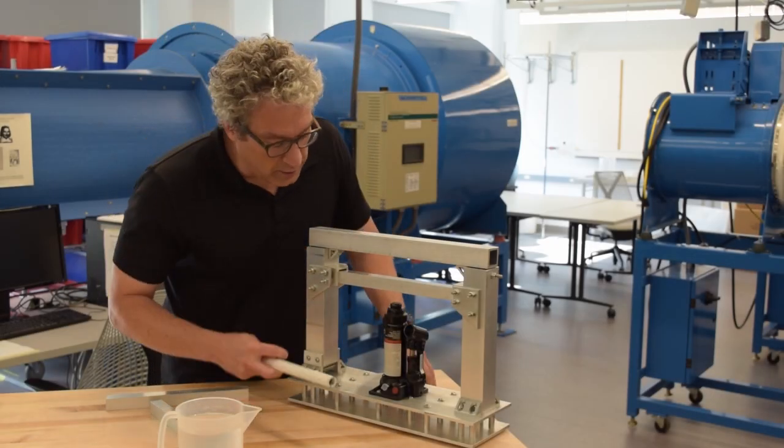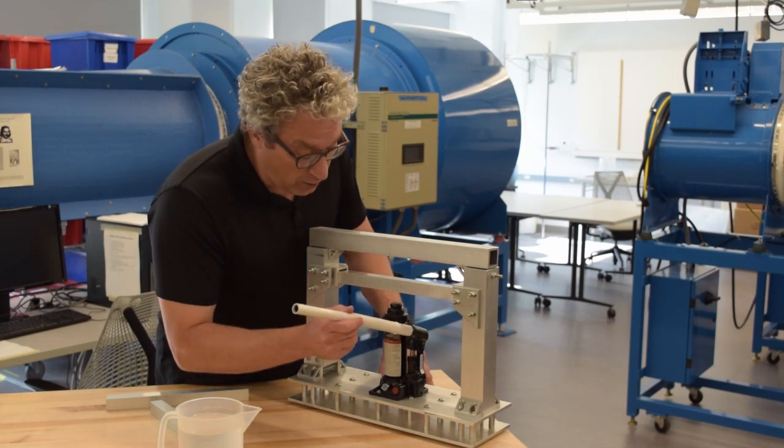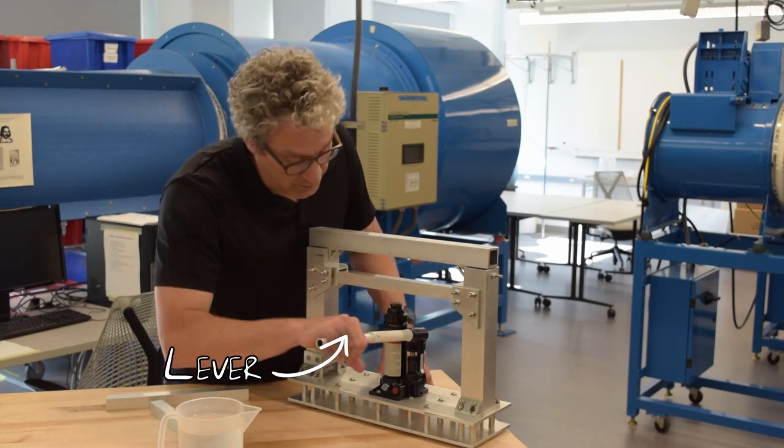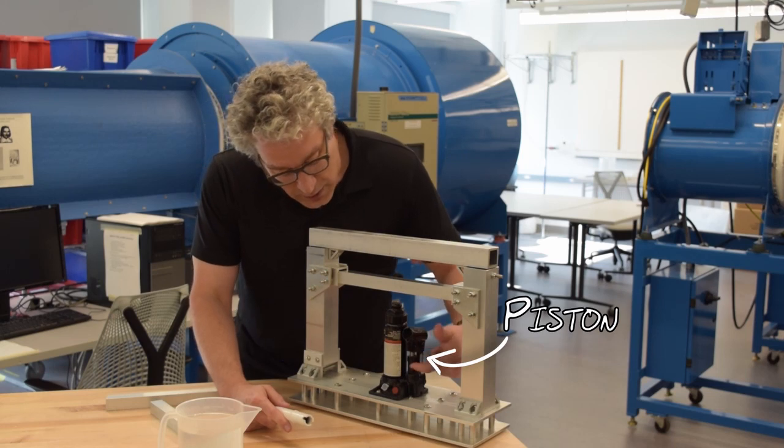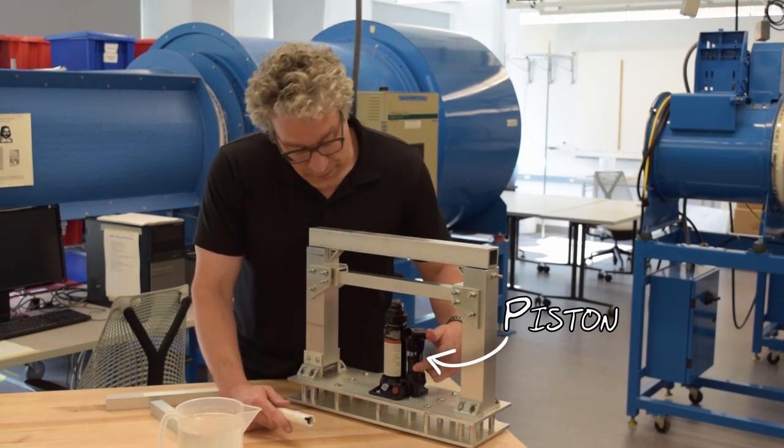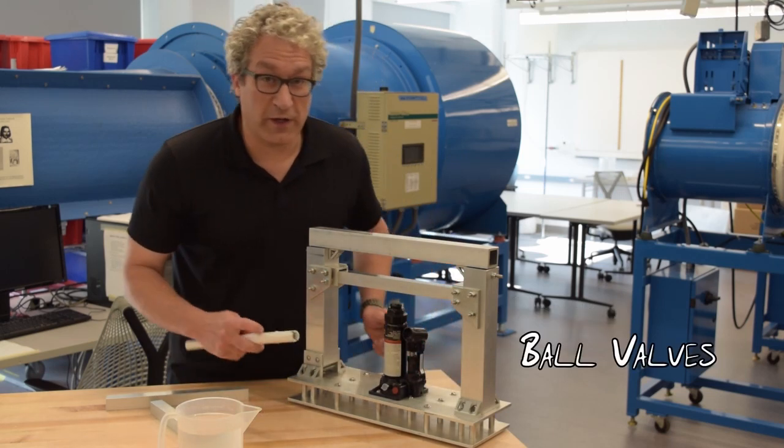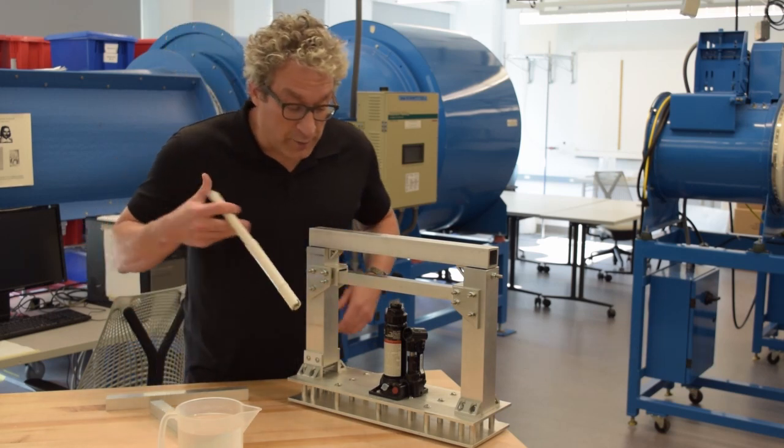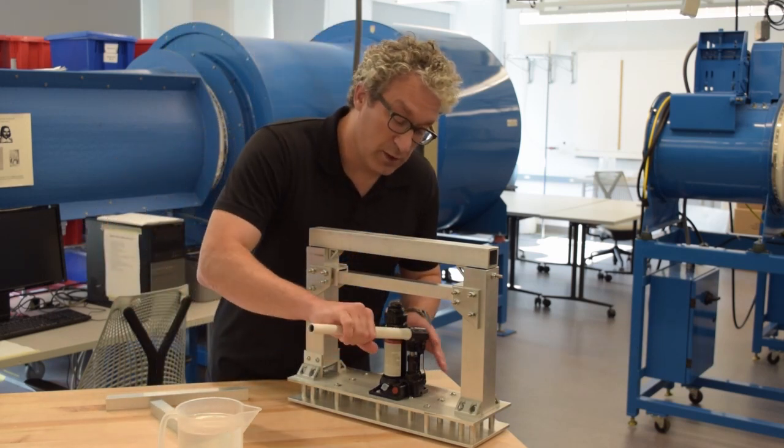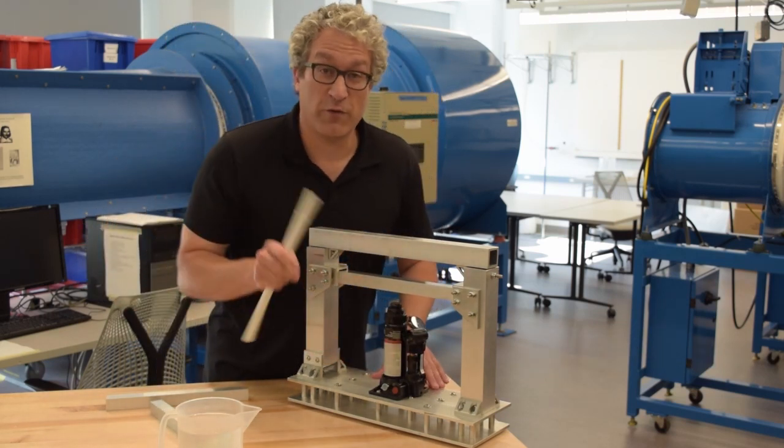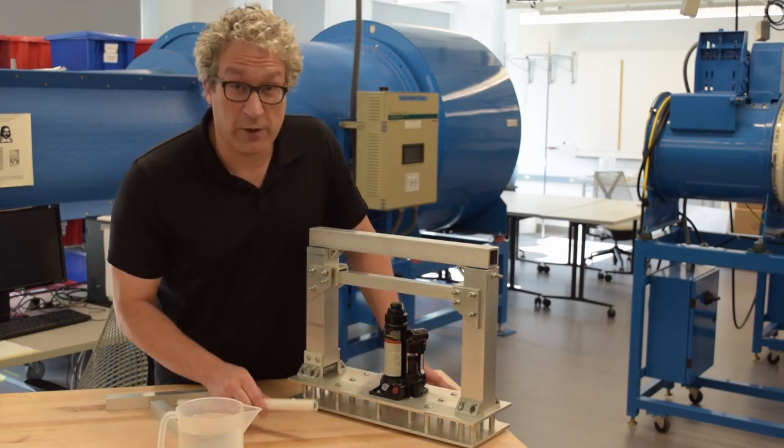This hydraulic jack has a number of parts. It has a lever arm that I can actuate. That lever arm drives this piston which is connected to a reservoir of oil. Inside the jack there are two ball valves that rectify the motion. They allow me to apply a reciprocating motion to this lever arm and to drive the oil in one direction, basically creating a reciprocating pump.